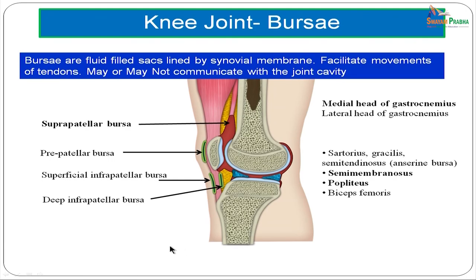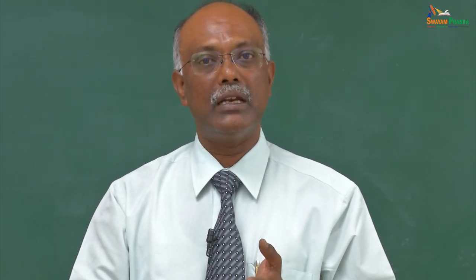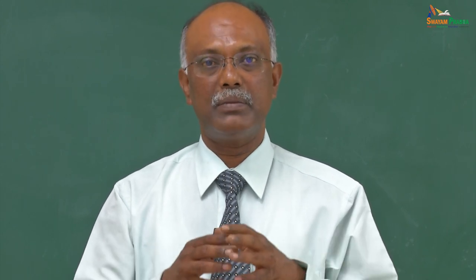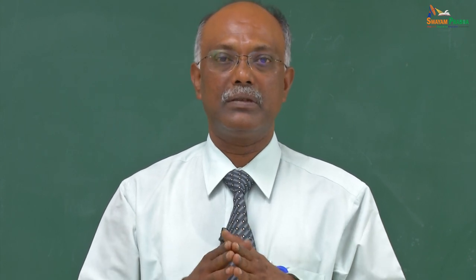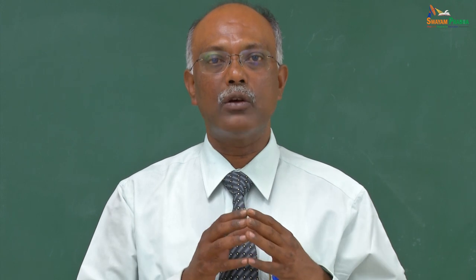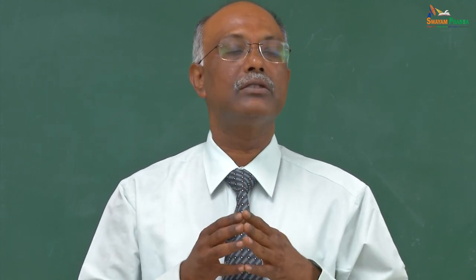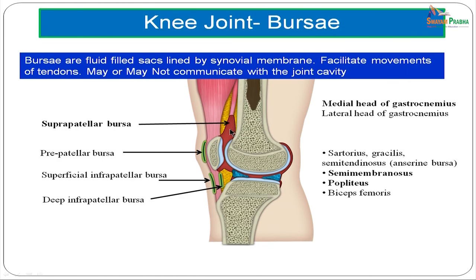To summarize the intracapsular ligaments: the anterior and posterior cruciate ligaments, the medial and lateral menisci, the coronary ligaments, the transverse ligament, and the meniscofemoral ligaments. Synovial bursae are fluid-filled sacs lined by synovial membrane that facilitate tendon movements and may or may not communicate with the joint cavity. The suprapatellar bursa is an upward extension of the joint cavity and communicates with it. In front of the patella is the prepatellar bursa.